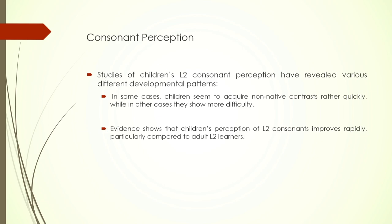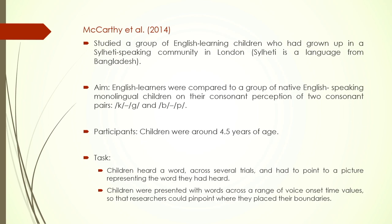Studies of children's L2 consonant perception have revealed various different development patterns. In some cases children seem to acquire non-native contrasts very quickly, while in other cases they show more difficulty. There is evidence that children's perception of L2 consonants improved rapidly, particularly compared to adult L2 learners. Consonant contrasts and consonants themselves represent a complex domain of L2 learning, and in this domain children are found to do better than their adult counterparts.